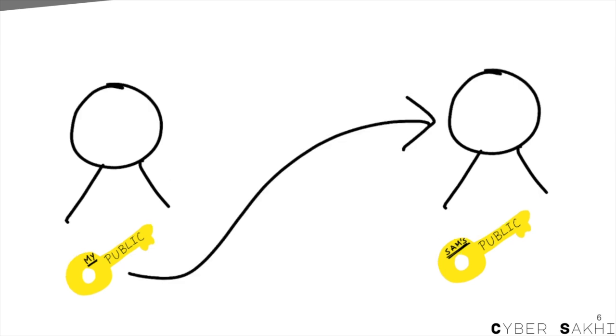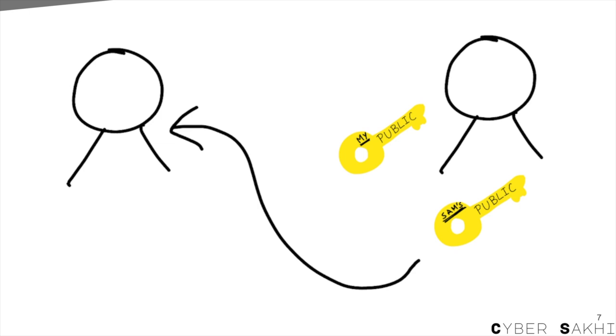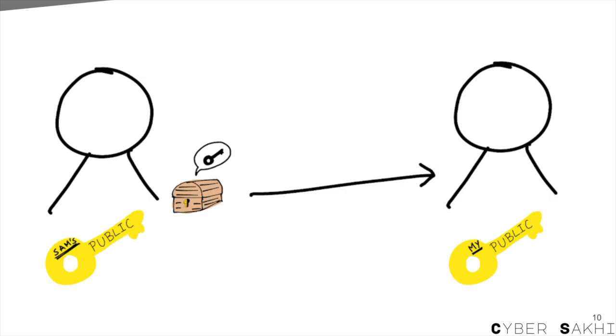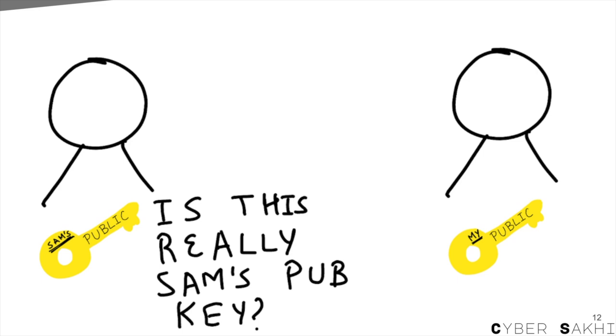You send Sam your public key. Sam sends you his public key. You use Sam's public key to lock a symmetric key — a secret code — and send it to him. Sam unlocks it with his private key. Now you both have the same secret code to encrypt messages. We've learned in previous lessons that symmetric keys are faster for longer chats, but to share them securely, we do need those public keys. But here's the catch: what if Joker swaps those public keys?